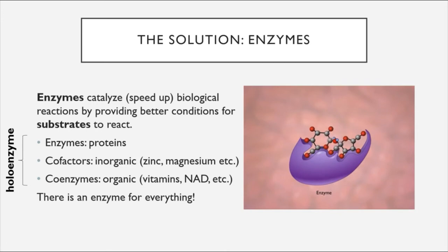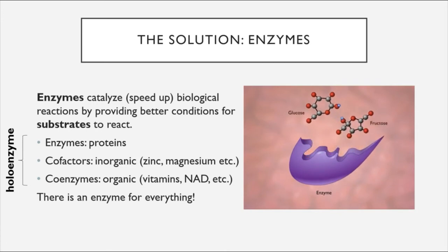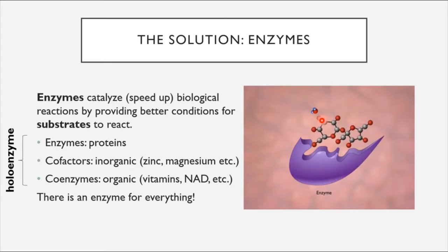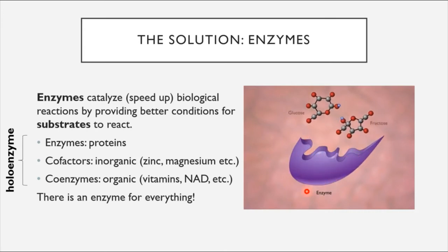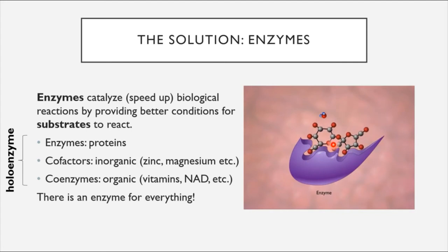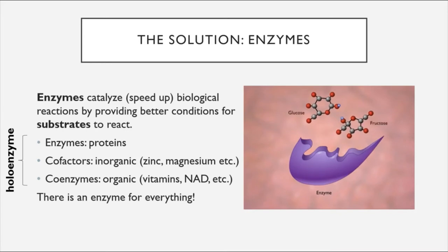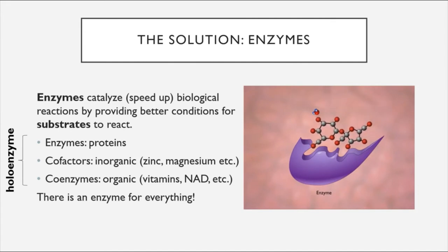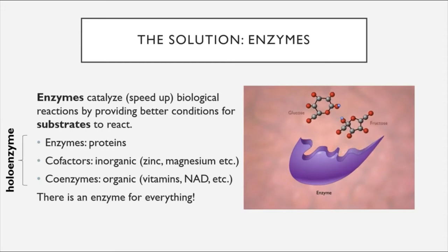There is an enzyme out there for virtually every chemical reaction that needs to happen in living cells. Every enzyme is tailor-made to host a specific chemical reaction. This enzyme is receiving a very specific molecule—sucrose—that is a perfect fit for its active site, and it breaks that sucrose down into two constituent pieces: glucose and fructose. Without these enzymes, those chemical reactions would not occur often enough to support life.